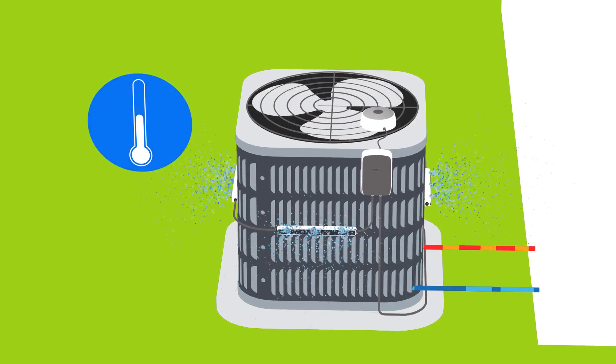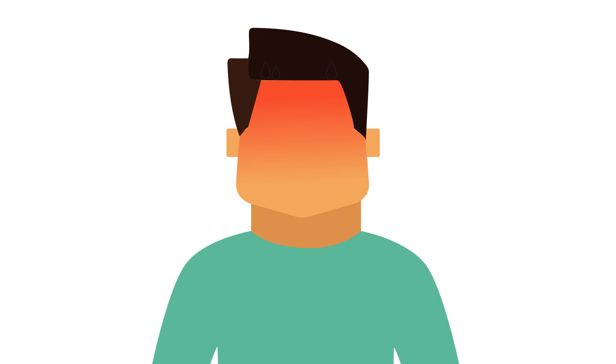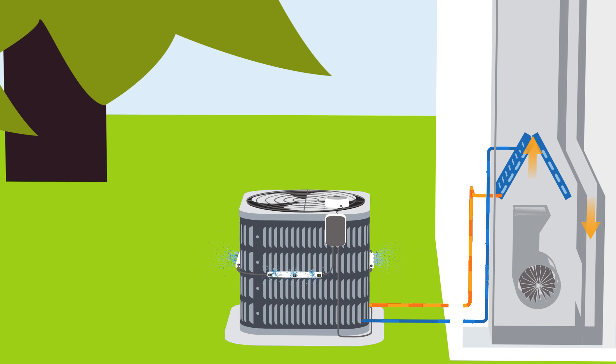Evaporative cooling occurs anytime water evaporates. Just as sweat pulls heat from your body as it evaporates off your skin, the fine mist sprayed by Mistbox pulls heat from the air as it evaporates.